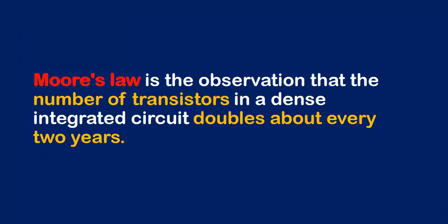The next thing is Moore's Law, which states that the number of transistors in a dense integrated circuit doubles about every two years. So every two years, the number of transistors is going to be doubled in dense integrated circuits, which are basically the processors.